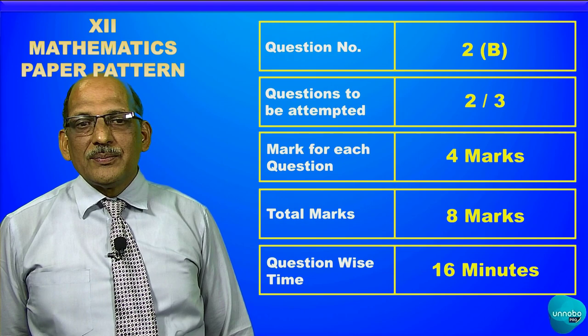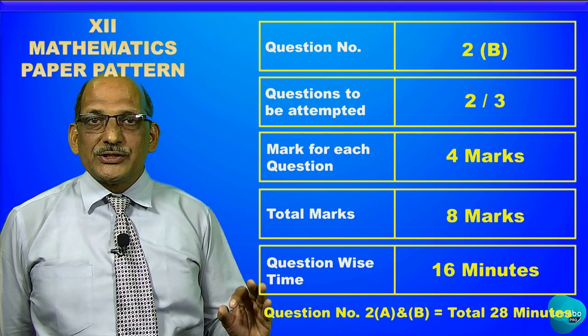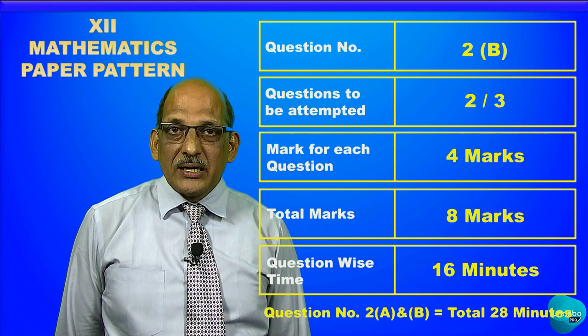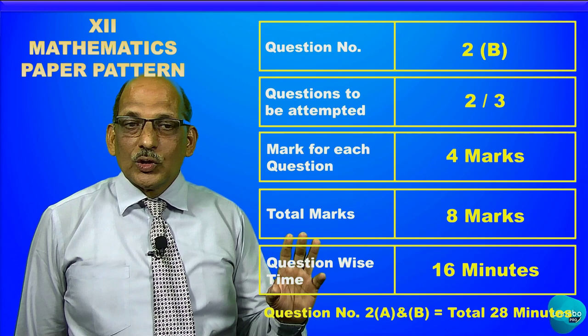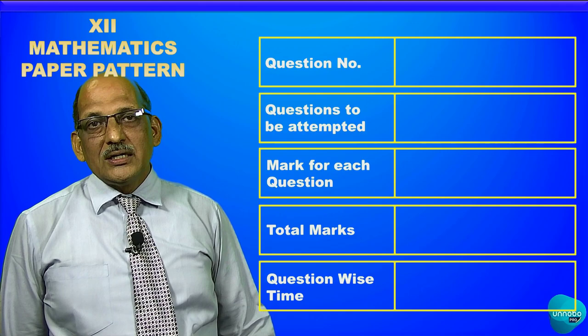The time allotted by the board for question 2B will be 16 minutes. So if you look at the complete question number two, including sub-question A and sub-question B, the total time to complete question number two is 28 minutes. Question number one takes 24 minutes and question number two takes 28 minutes.